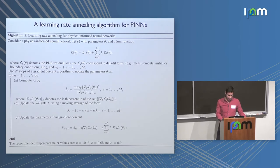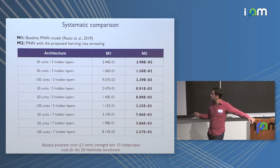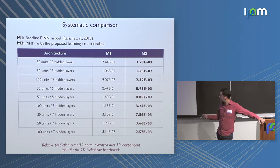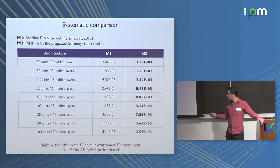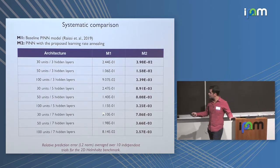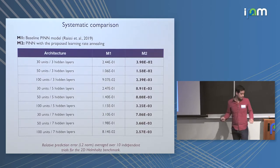We can now revisit the baseline example and run a systematic comparison between the original approach with no re-weighting of the different loss terms versus the adaptive learning rate algorithm. There's a consistent improvement in prediction error — in many cases, you could get prediction errors up to 30% with the original approach, whereas with this method, regardless of architecture, you get consistent predictive performance.